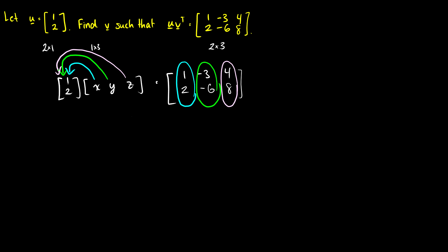So with this we can see, well, [1, 2] times what is equal to [1, 2]? Well, that's 1, so x will be 1. Why? Well, 1 times -3 is -3, 2 times -3 is -6. So y will be -3, and z is going to be 4.